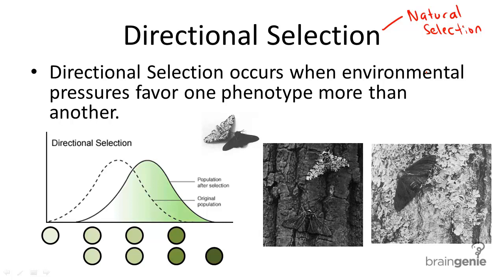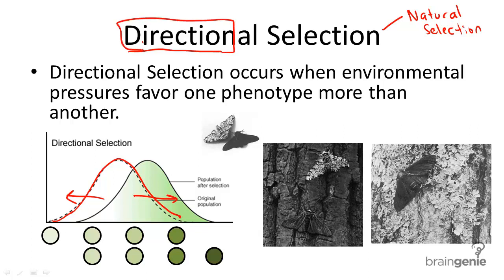When you think of directional selection, imagine that the mean or the average phenotypes — if this is the mean here — or the average traits or phenotypes shown in a population, is shifted to one direction or the other. Either is fine. So in essence, we're talking about shifting direction.